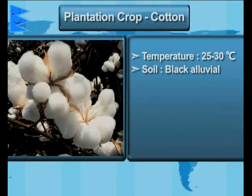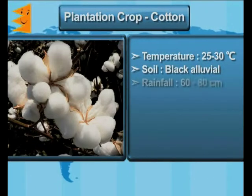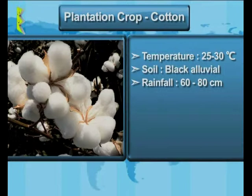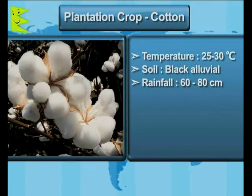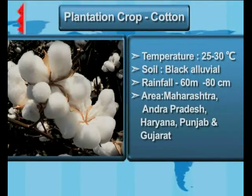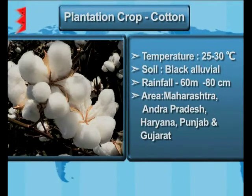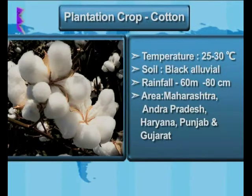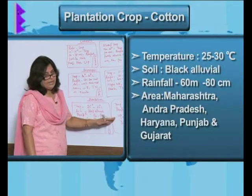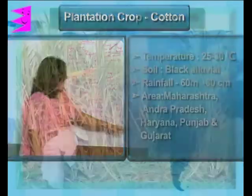Black alluvial soil is the requirement for the cotton crop, and the rainfall is 60 to 80 centimeters. Maharashtra, Andhra Pradesh, Haryana, Punjab, and Gujarat are the states where cotton is actually grown.